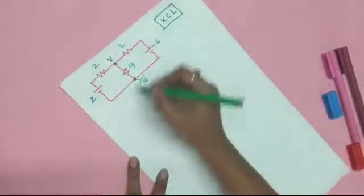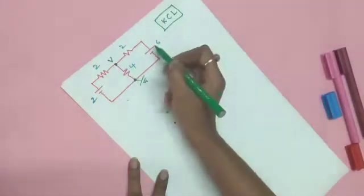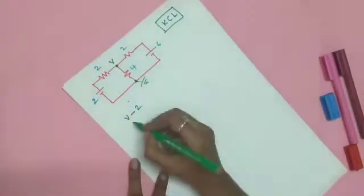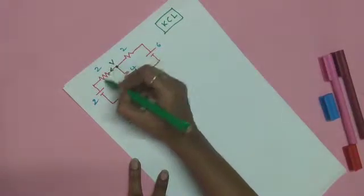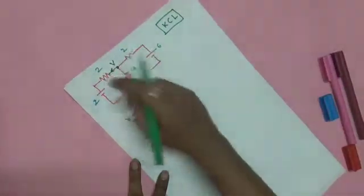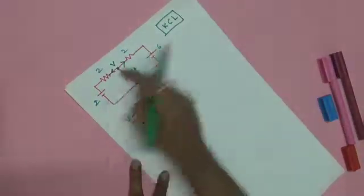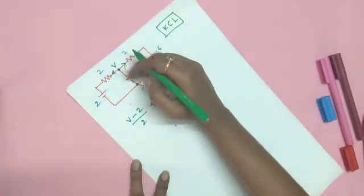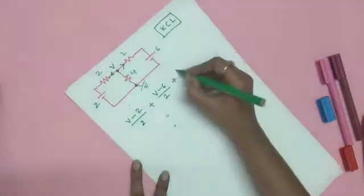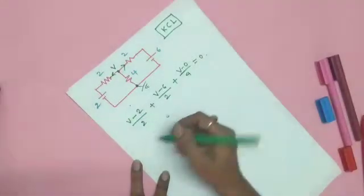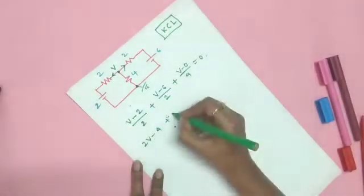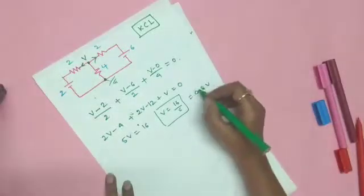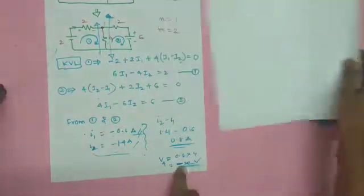Assuming V is greater than both 2 V and 6 V, currents are leaving this node. The KCL equation is: (V − 2)/2 + (V − 6)/2 + V/4 = 0. Multiplying through: 2(V − 2) + 2(V − 6) + V = 0, which gives 2V − 4 + 2V − 12 + V = 0, so 5V = 16, therefore V = 16/5 = 3.2 volts.